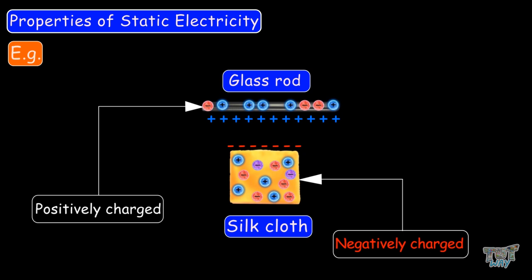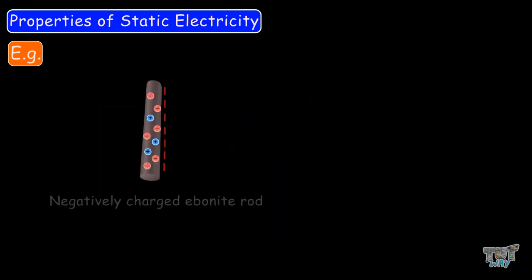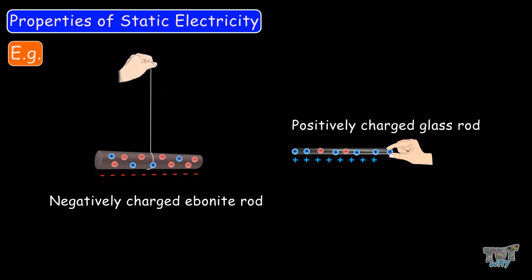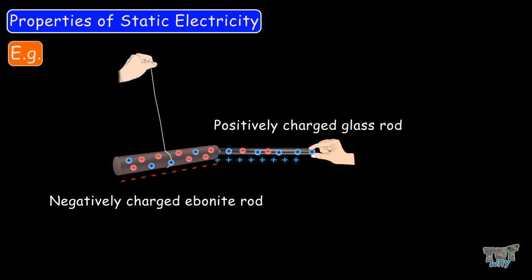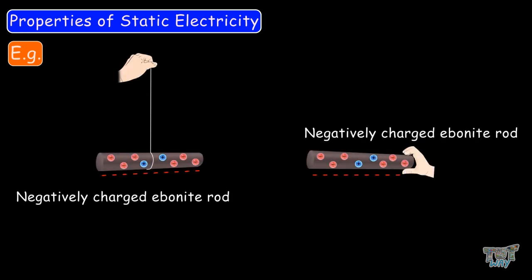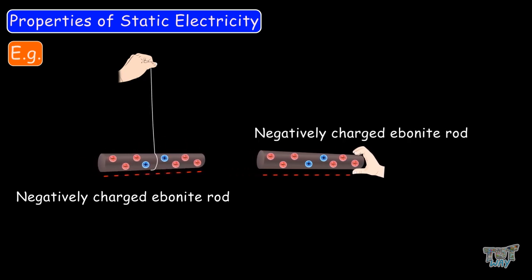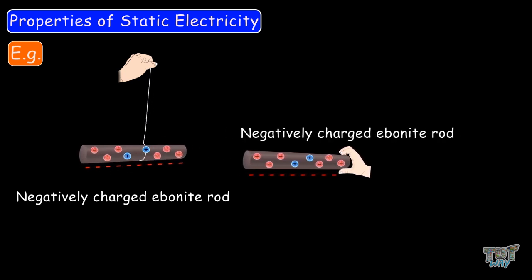For our experiments we have the ebonite rod which is negatively charged and the glass rod which is positively charged. When we suspend the negatively charged ebonite rod with a thread and bring the positively charged glass rod closer, the rods attract each other. When we take two negatively charged ebonite rods, suspend one and bring the other closer, both rods are negatively charged and they repel each other.